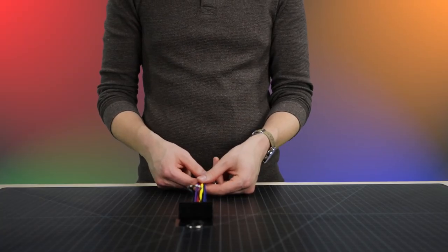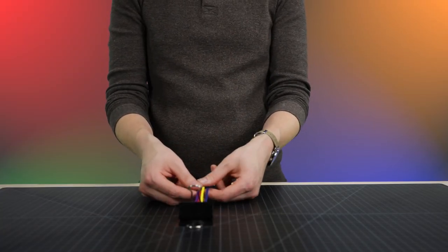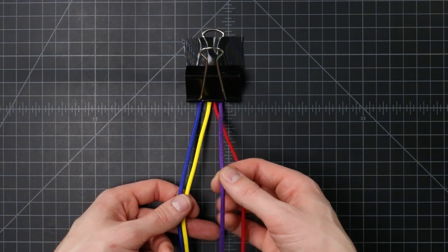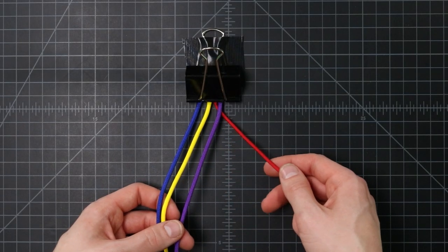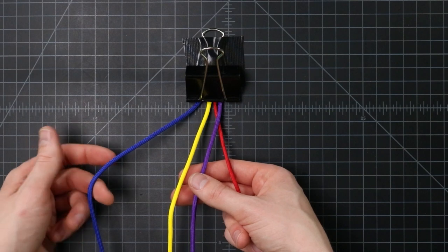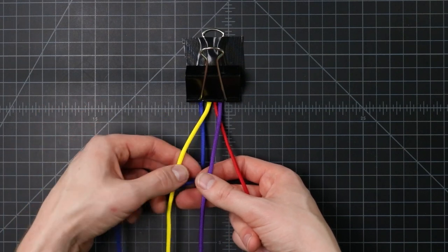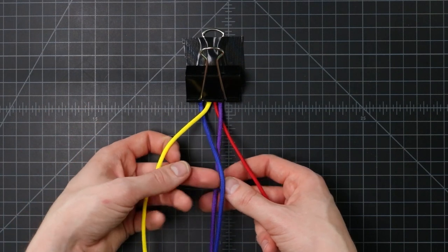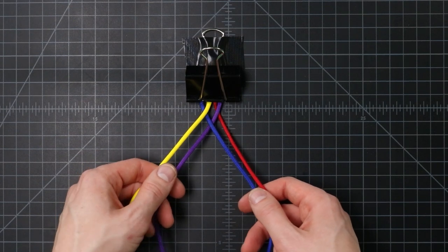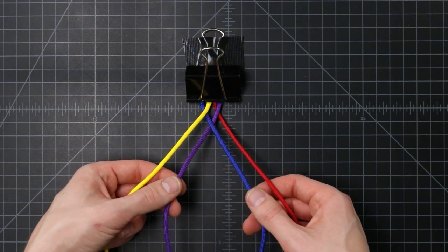With four strands, our method is a little bit different, but essentially the same concepts are used. We're going to bring our purple cord over that second cord, but then on our left side, we're going to bring the blue underneath the yellow and over the top of the purple. We're crossing those middle cords each time.